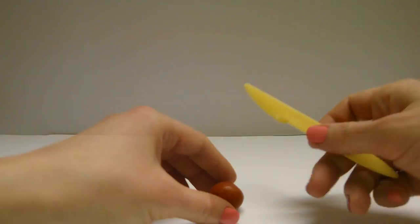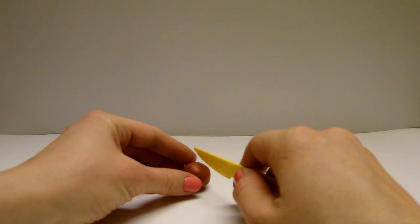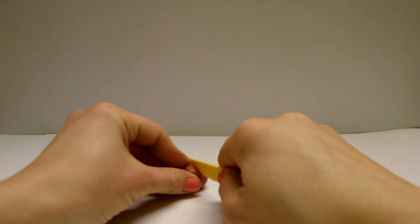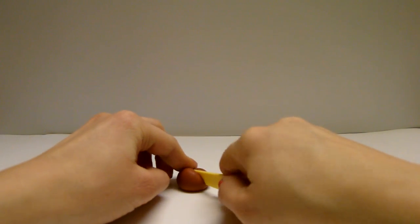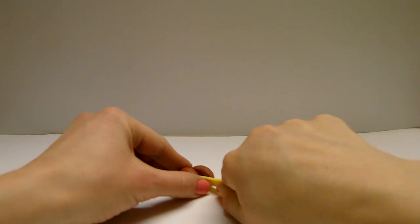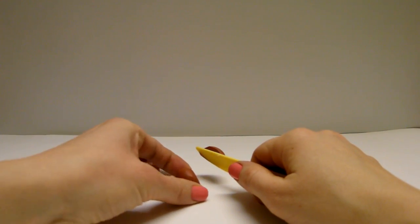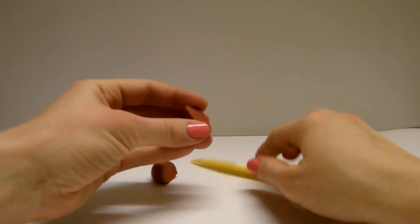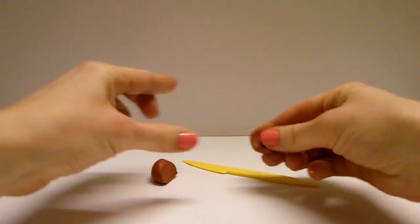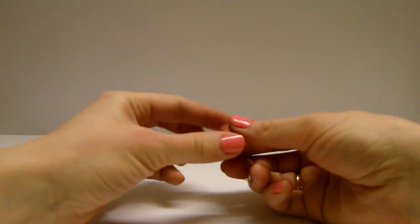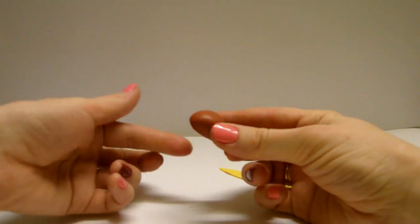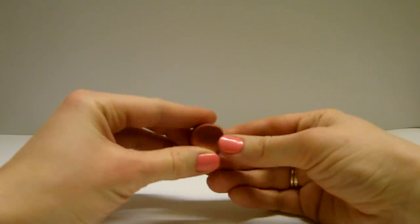Now we'll take a stick and divide the ball into two unequal parts. Let's take a bigger part and trim it a bit. Now make a hole inside with your finger.